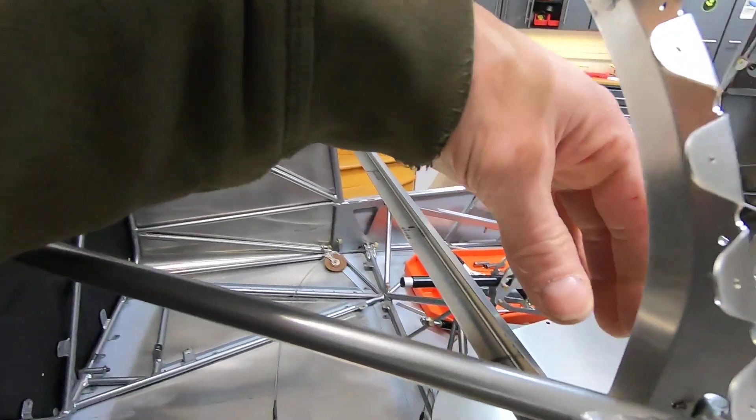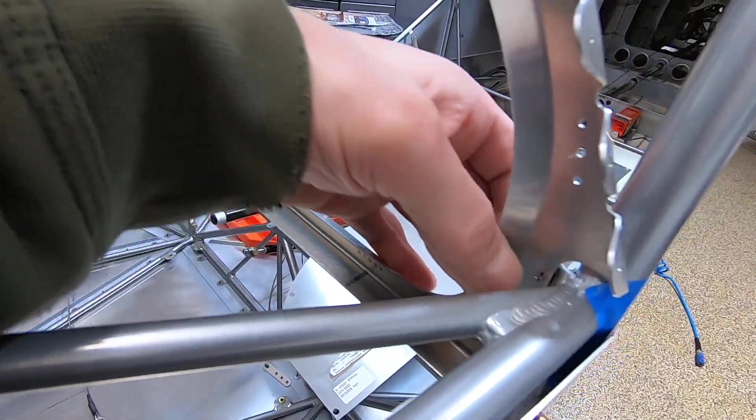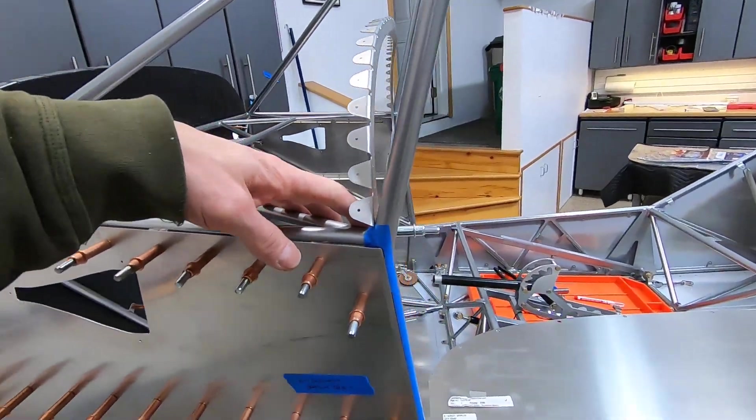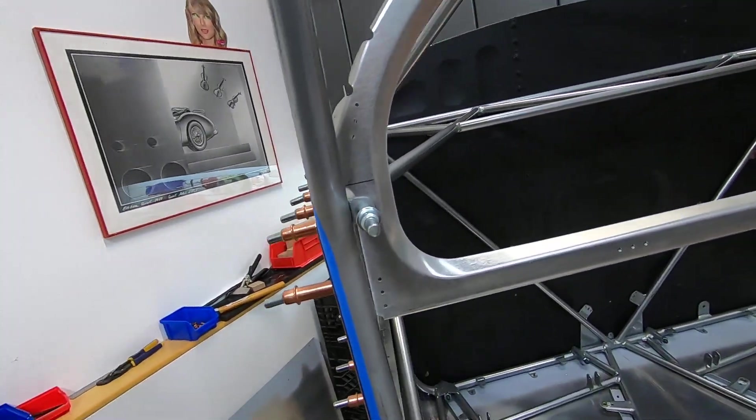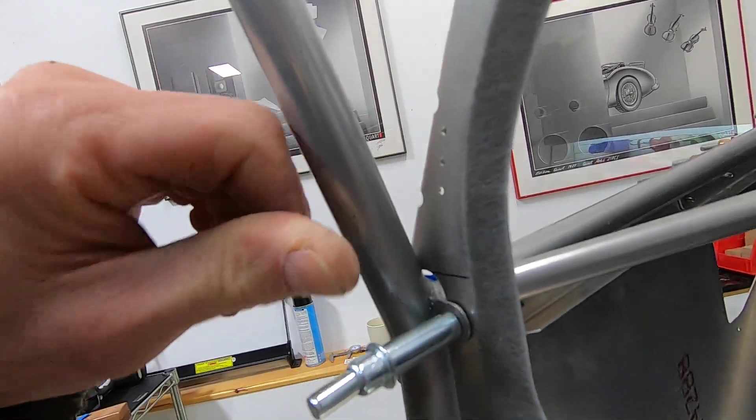What I did is I cut out maybe a sixteenth of an inch going in. I didn't want to get too close to the rivet hole, and I also moved this up and took I believe an eighth inch off of the top.